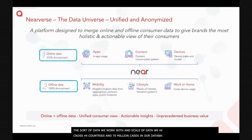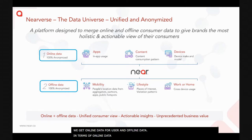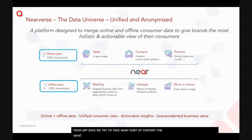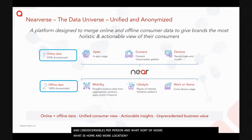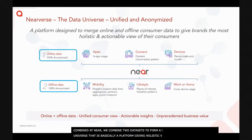We work with two types of data: online and offline. Online data is mostly app data — we figure out what content users are consuming and what devices they're on. Offline data is latitude and longitude data — we figure out lifestyle interests, visitation history, home location, and work location. At Near we combine these two datasets to form a data universe we call the Nearverse, which gives a holistic view of a consumer.